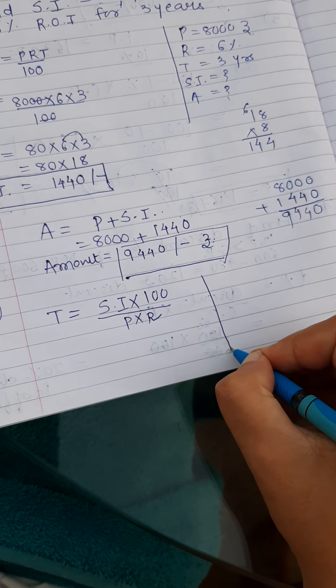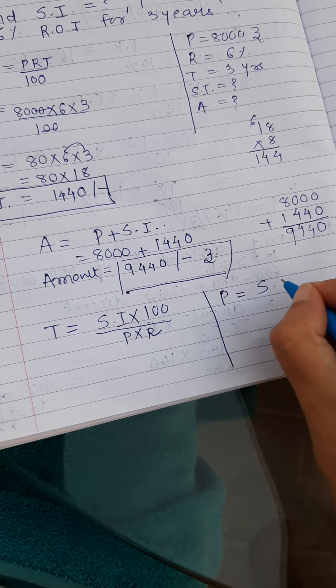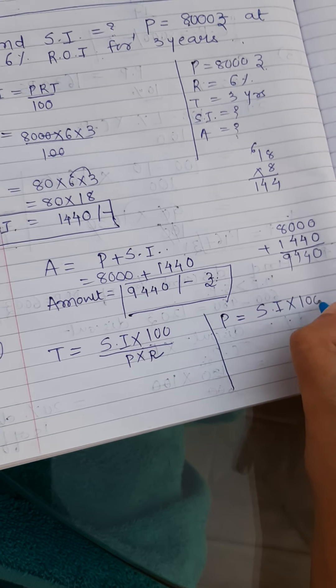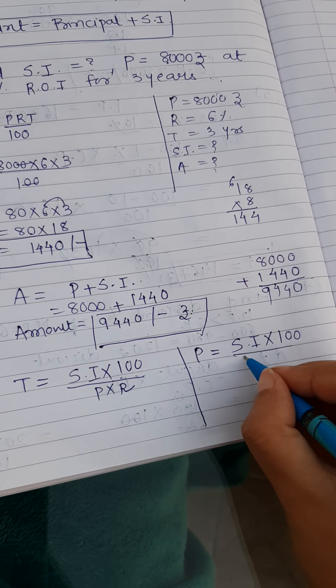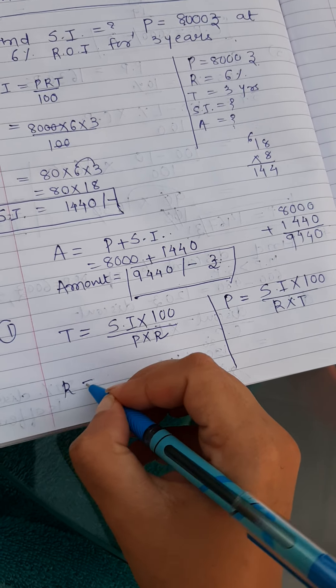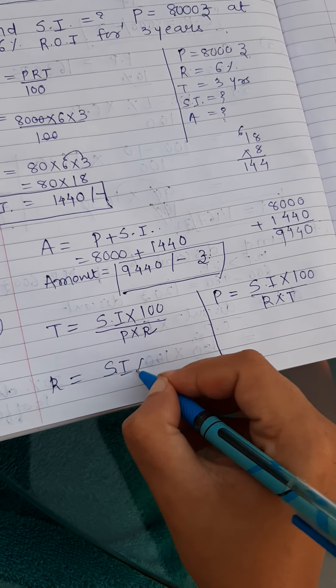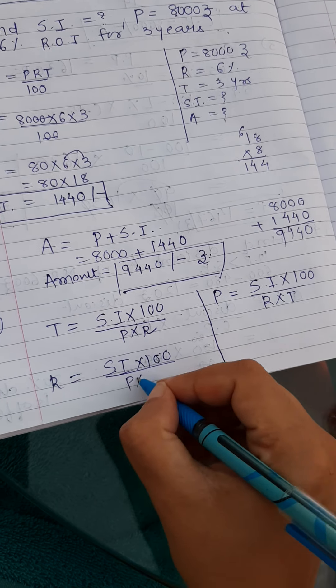Suppose you need to find P, principle. Then SI that is simple interest into 100, SI into 100. Now P you are supposed to find, so R and T must be given. Right. If you want to find R, then SI into 100 upon P into T.